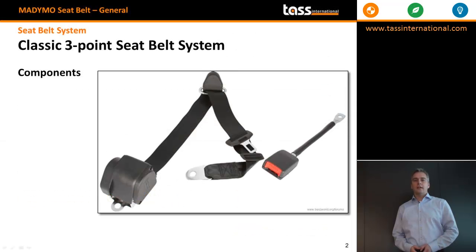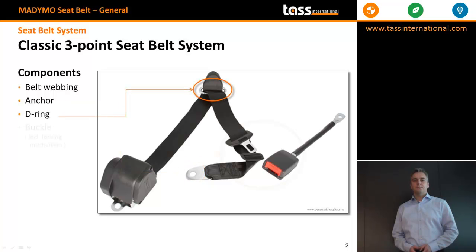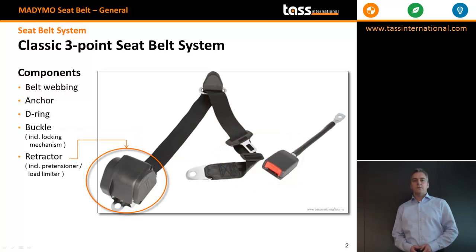First, look at a classic three-point seatbelt system. Several components can be distinguished: the seatbelt webbing, the anchor, the D-ring, the buckle including the locking mechanism, and the retractor including retentioner and load limiter systems.